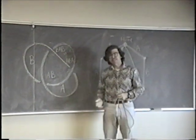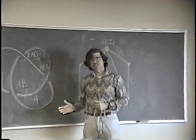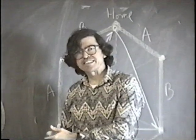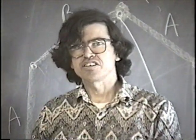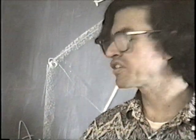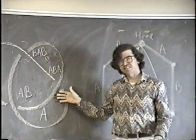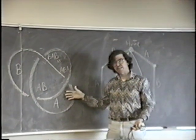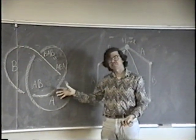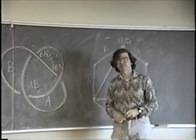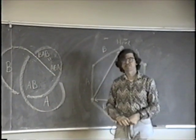Any knot you have will create some form of branching universe. You can often use this to distinguish between different knots. We know the trefoil knot is not the unknot — it's really knotted — because it creates a different branching pattern in the universe.